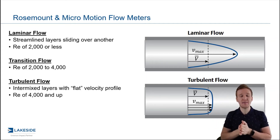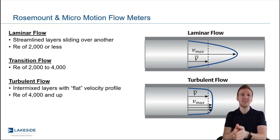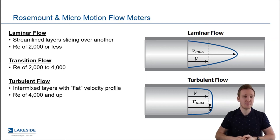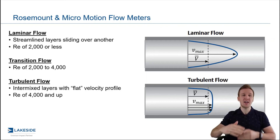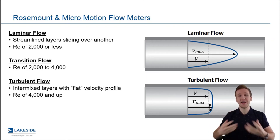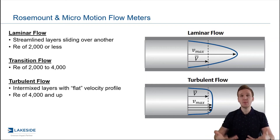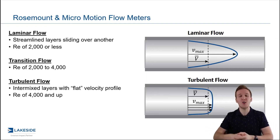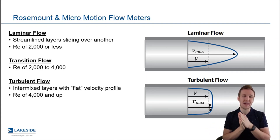As we know, fluids near the edge of the pipe are going to travel a lot slower than fluids near the center of the pipe. And when you have laminar flow, as the name implies, it's very streamlined laminar layers sliding over top of each other. You can see that center line — that maximum velocity — is going to be very, very far away from the average velocity. With a turbulent flow regime, as it describes, it's very turbulent, and that average velocity is going to be a lot closer to that maximum velocity.